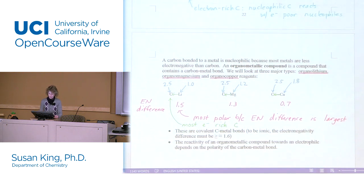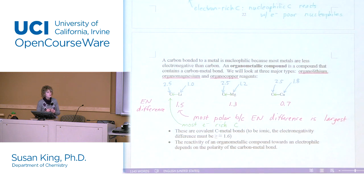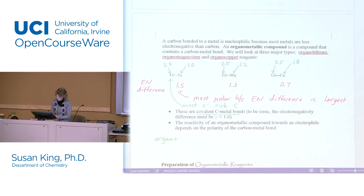There's a tendency to think of these as ionic bonds. Going back to chapter one, once the electronegativity difference gets greater than about 1.7-1.8, electrons are transferred completely giving an ionic compound. But the largest difference we have is 1.5, so the carbon-lithium bond is considered covalent. For covalent carbon-metal bonds, reactivity toward electrophiles depends on polarity: organolithium are the most reactive, greater than organomagnesium, greater than organocopper.